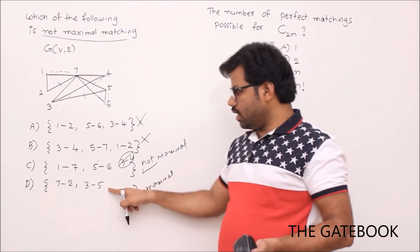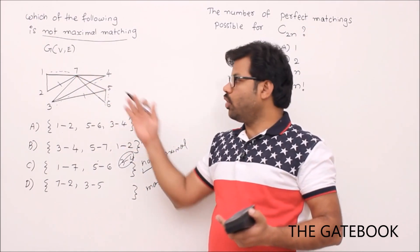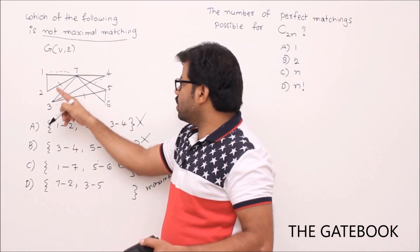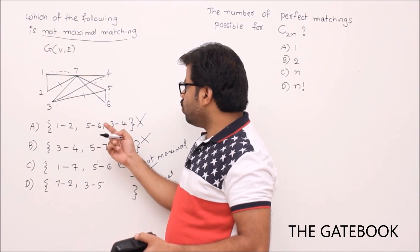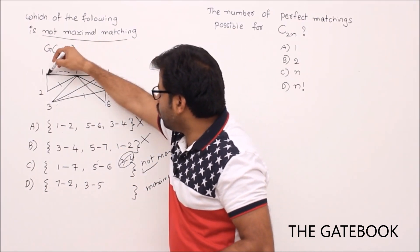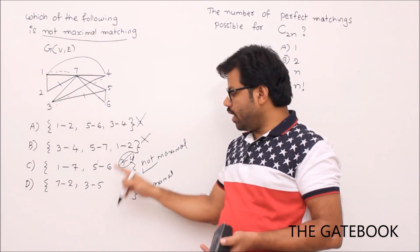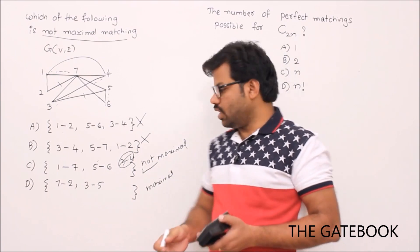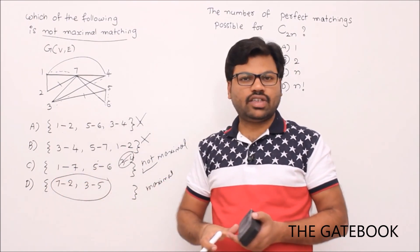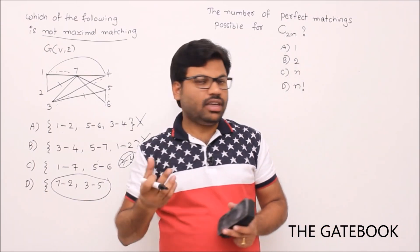For this one you can't add any further edge, so this is also maximal. There is a chance here you can add further vertices, but there is no corresponding support from this graph. For that you should have like, for example, 7-2 and 3-5. Then you might have had an edge from maybe 1 to 4. If we had 1 to 4 edge then we could have made it a better matching. This is maximal matching. We can't increase the size of it. Finally, answer is option C.